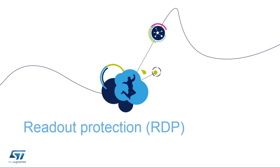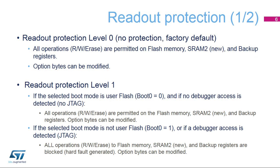Let's take a closer look at the details of the Readout Protection feature. The STM32L4 Readout Protection feature offers three levels of protection for all SRAM2 and flash memory, as well as the backup registers. Level 0 means no protection — this is the factory default. Read, write, and erase operations are permitted in the SRAM2 and flash memory, as well as the backup registers.